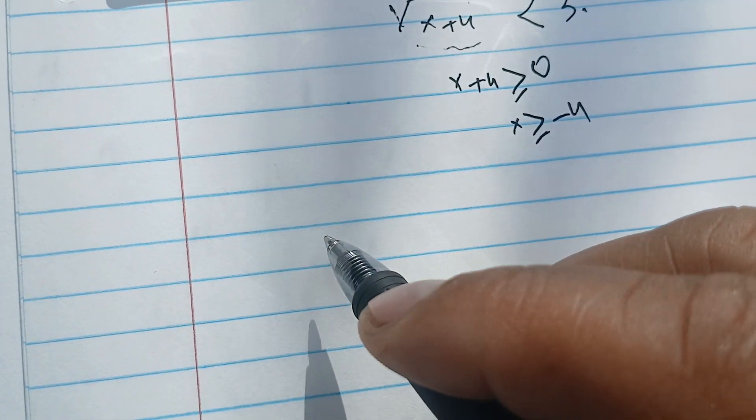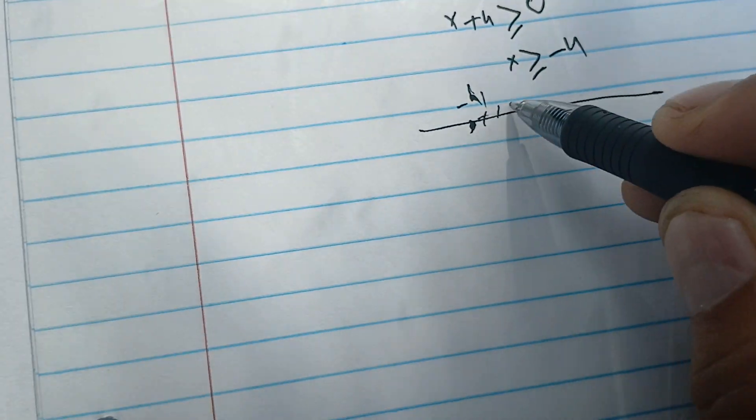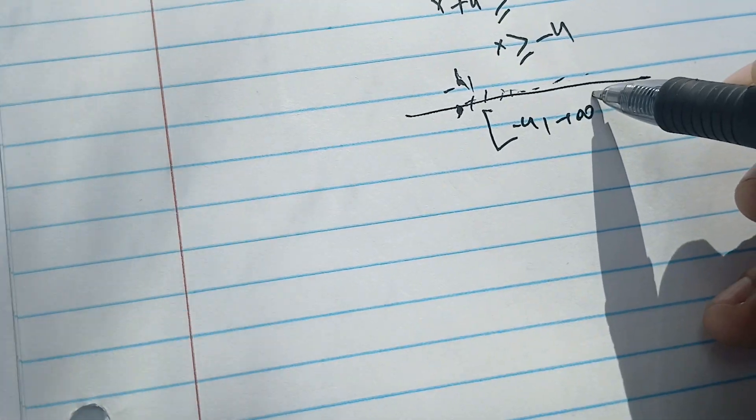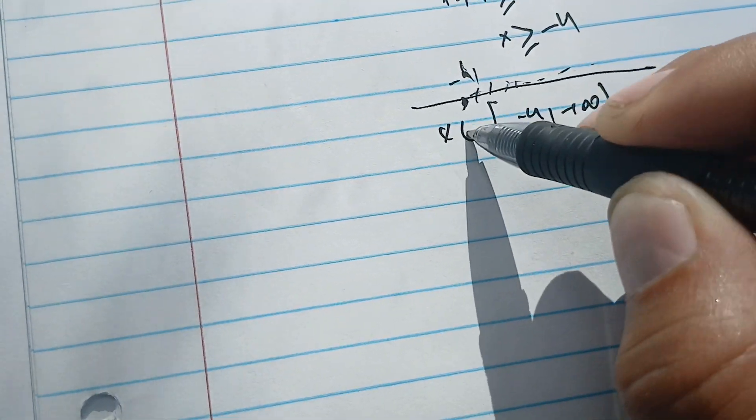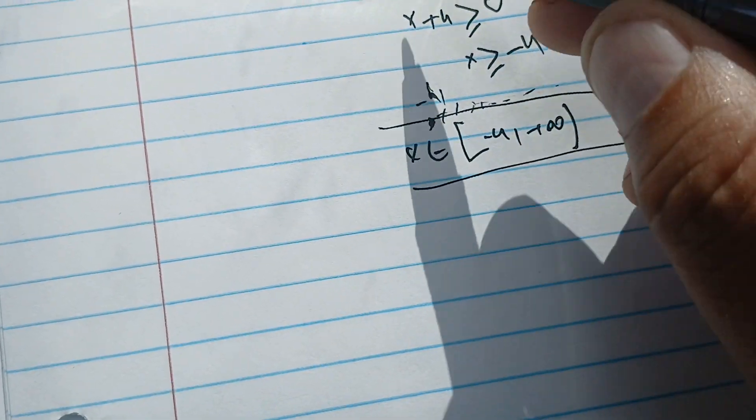This would give us that x has to be bigger than minus 4. So that means this is minus 4, and all the values that are bigger than minus 4 are in this interval: minus 4 to plus infinity. So x has to be here before we start.